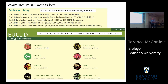Let's go online. EUCLID is the software for Eucalypts of Australia. It's been around since the late nineties, went national on CDs and DVDs in 2006, and then went online in 2015.